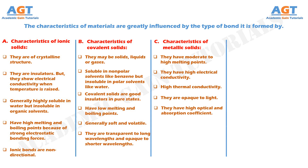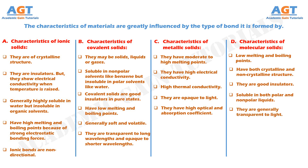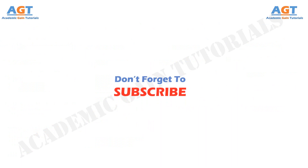And finally, the characteristics of molecular solids. They have low melting and boiling points. They have both crystalline and non-crystalline structure. They are good insulators. They are soluble in polar and non-polar liquids. They are generally transparent to light. So, we have learned in detail about the effect of bonds on material characteristics. Thank you.